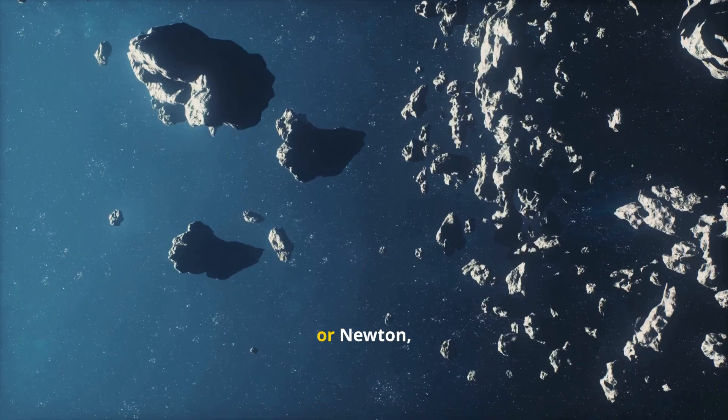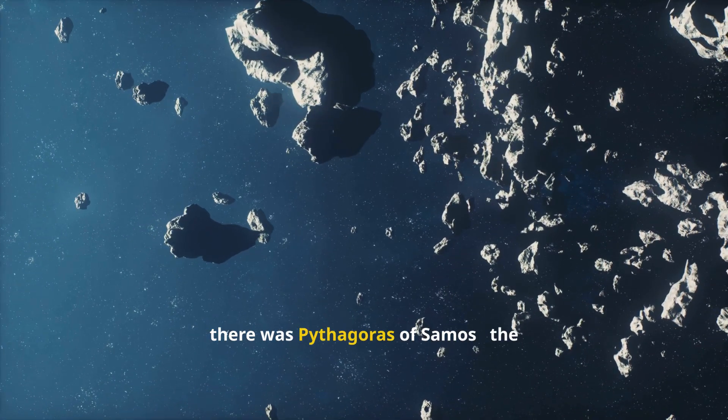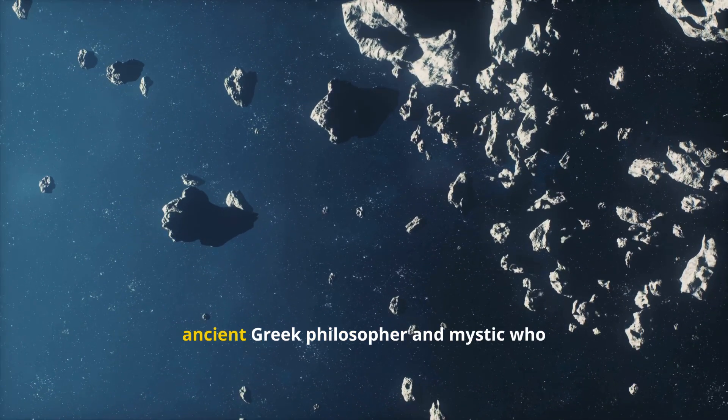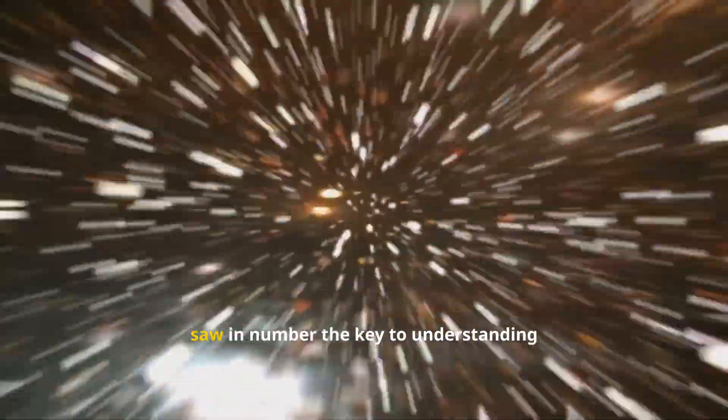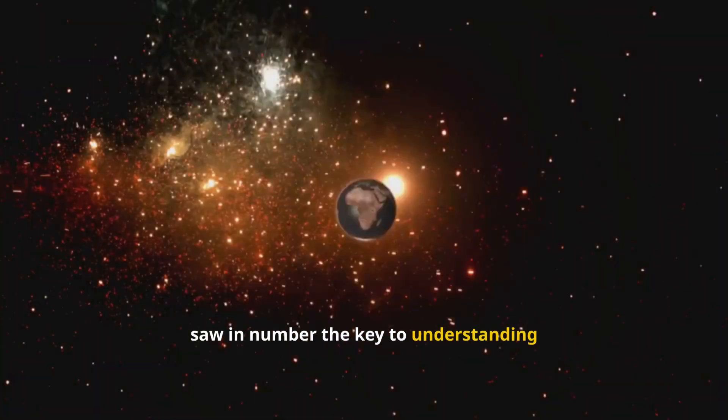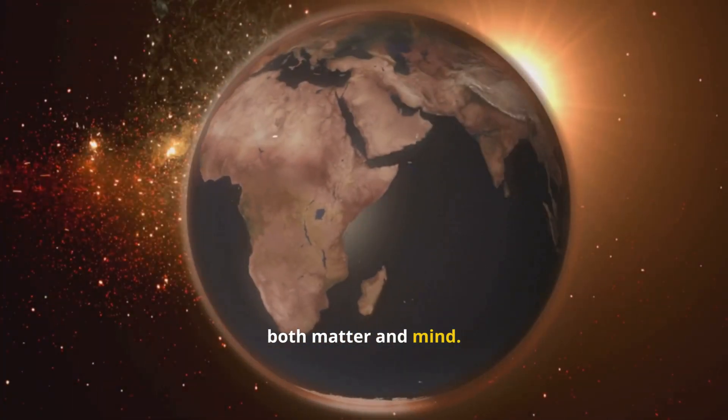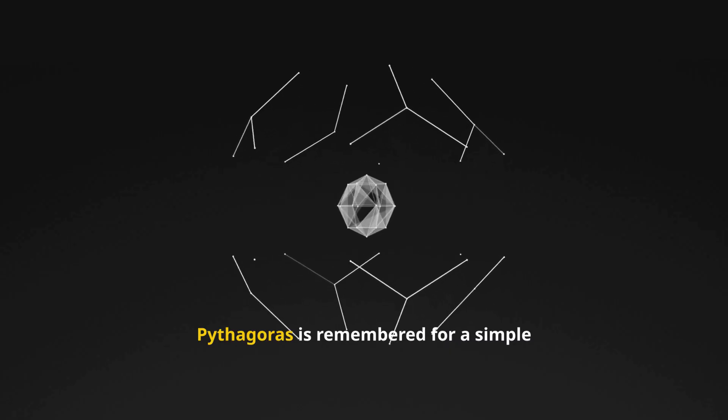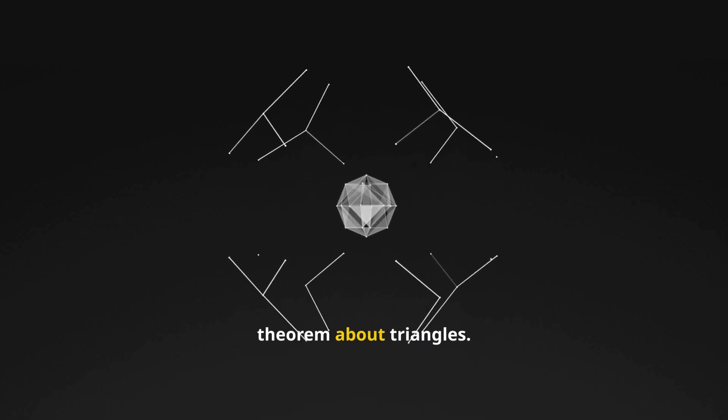Long before Plato, Descartes, or Newton, there was Pythagoras of Samos, the ancient Greek philosopher and mystic who saw in number the key to understanding both matter and mind. To most people today, Pythagoras is remembered for a simple theorem about triangles.